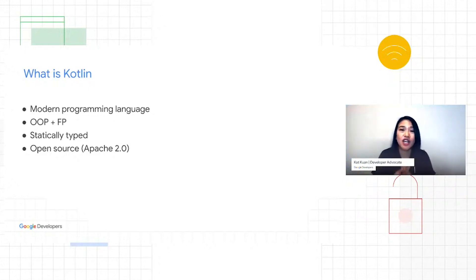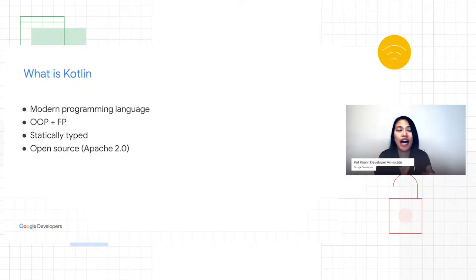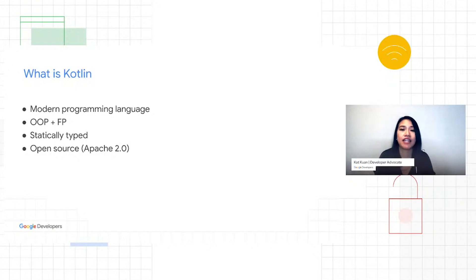Kotlin is also open source. It was created first by JetBrains, and there's a whole community of contributors contributing to it. JetBrains and Google have formed the Kotlin Foundation as a partnership to really promote, protect, and advance the Kotlin programming language. So there's a lot of investment in this language to move it forward.